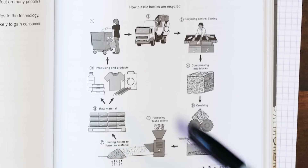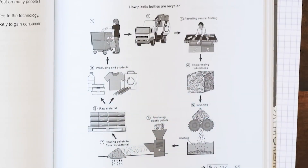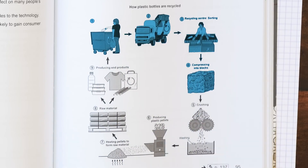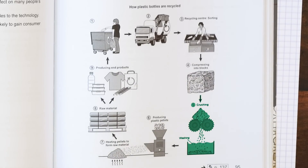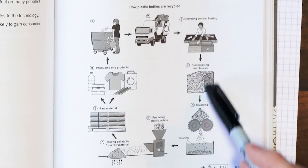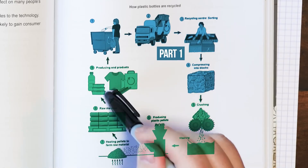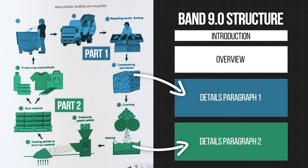There will normally be two details paragraphs, and normally when you look at a process there will be two parts. Looking at this process, the most logical way to divide it is: parts one to four, where the bottles haven't really been processed yet — the structure hasn't been changed in any way. But once we get to part five, we start to change the bottles and really process them. So it's easy to divide it: one, two, three, four is part one, and five, six, seven, eight, nine is part two. We need to take these details and divide them into two details paragraphs.